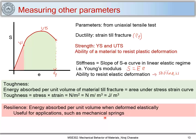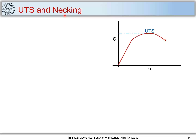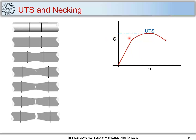We have seen yield strength and ultimate tensile strength. Now let's understand what happens beyond ultimate tensile strength. Above UTS there is necking happening. We have the engineering stress-strain curve with UTS marked. From where plastic deformation begins to UTS, there is a uniform decrease in cross-section area.